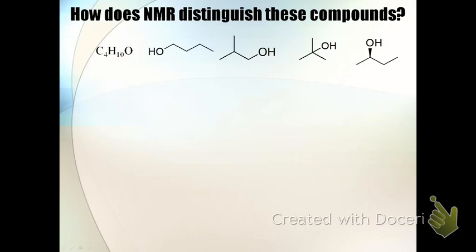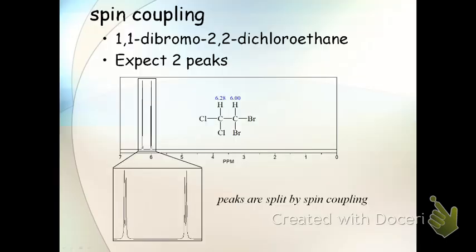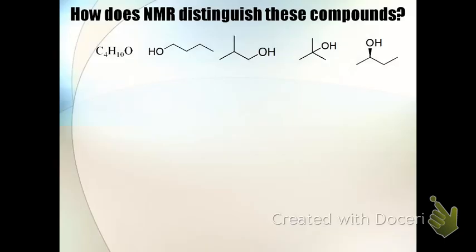Let's look at how we might use NMR to distinguish compounds based on the number of signals. In practice, we don't usually do this, but for learning, it's a good illustration of how useful a small amount of information can be. These compounds all have the same empirical formula. Let's figure out how many signals to expect for the first molecule.